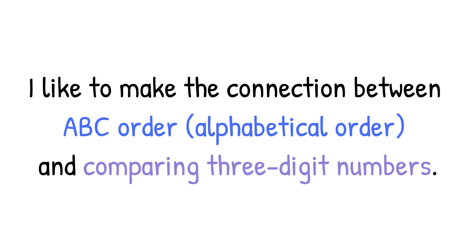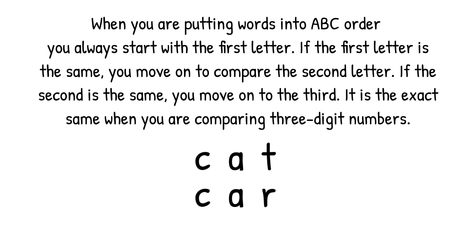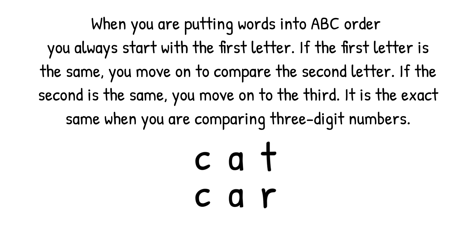I like to make a connection between ABC order and comparing three-digit numbers. When you are putting words into ABC order, you always start with the first letter. If the first letter is the same, you move on to compare the second letter. If the second is the same, you move on to the third. It is the exact same when you are comparing three-digit numbers.